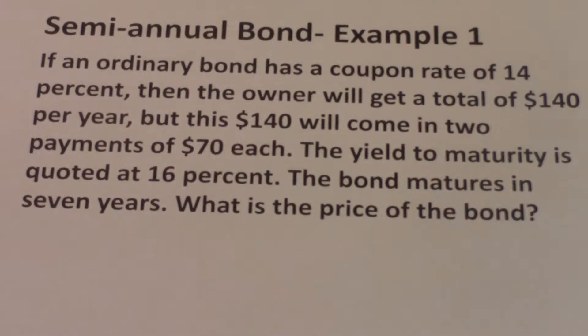If an ordinary bond has a coupon rate of 14%, then the owner will get a total of $140 per year. We take the coupon rate times the par value. In this case, it's $1,000. If you're not told what the par value is, you always assume it's $1,000 because most bonds have a par value of $1,000. So you take the par value times the coupon rate, and here you have a coupon payment of $140 per year.